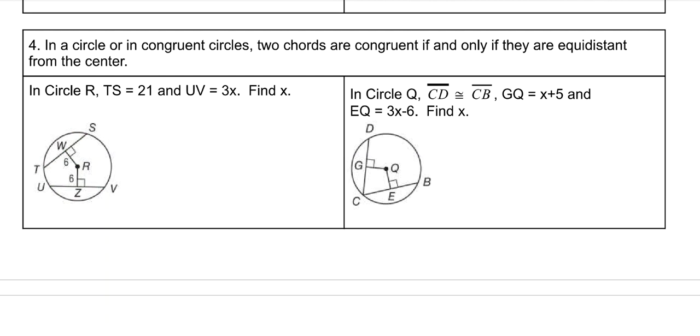So what that means is TS is 21, and UV is 3X. They're equal to each other. So 3X is equal to 21. And you know that because these are the same distance. Divide by 3, and X is 7.